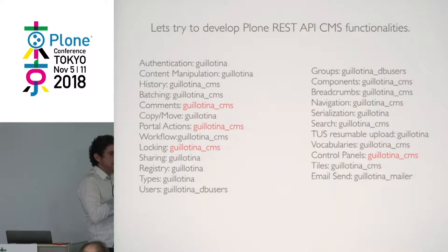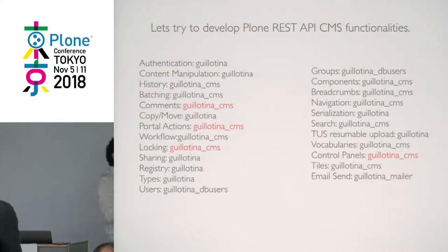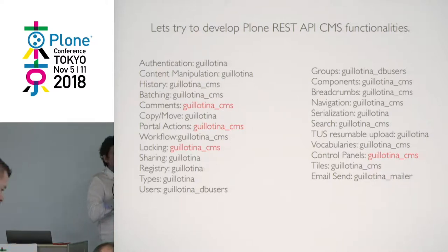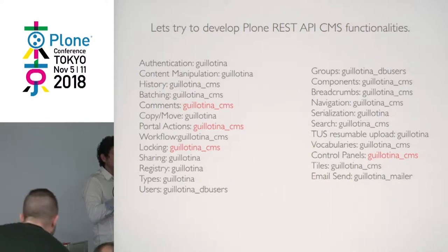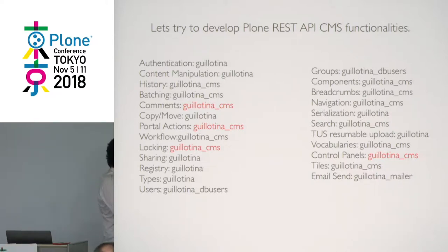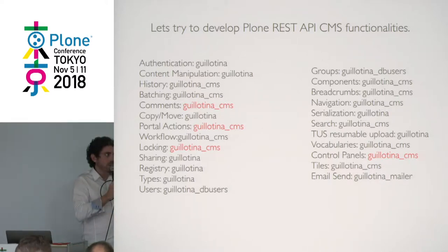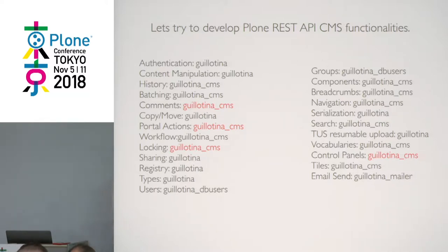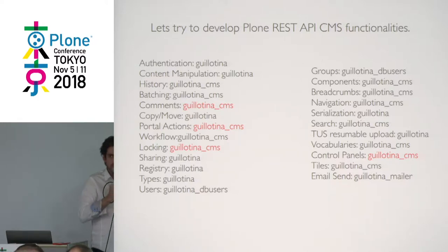History management is not in Guillotina out-of-the-box but is implemented in Guillotina CMS. Batching is still not in Guillotina CMS and needs to be implemented — we didn't have the use case yet. Comments could be easily implemented. Copy and move of objects is already in the Guillotina package. Portal actions are being defined per-project so right now not implemented in Guillotina CMS, but could be easily added.